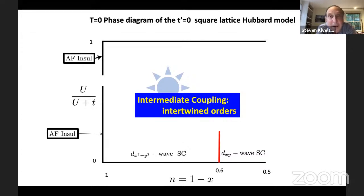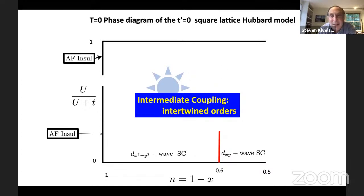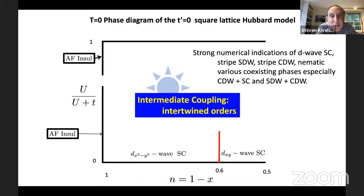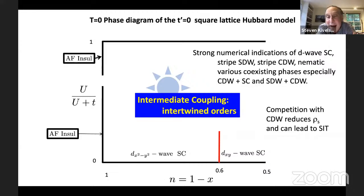There's another set of ideas for why the superfluid density may be so small, having to do with intertwined orders or the proximity to a superconductor-to-insulator transition at the underdoped side. In the intermediate regime, numerical studies show very clearly strong tendencies to many different types of ordered states: strong indications of D-wave superconductivity, striped spin density wave order, striped charge density wave order associated with stripes, nematic order, and various coexisting patterns. The reason we haven't sorted out the exact phase diagram is that the balance between these different phases is so delicate.